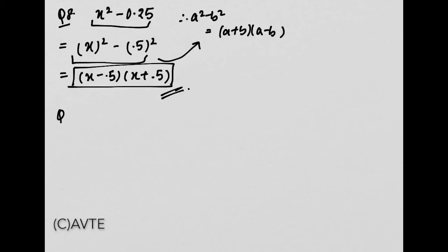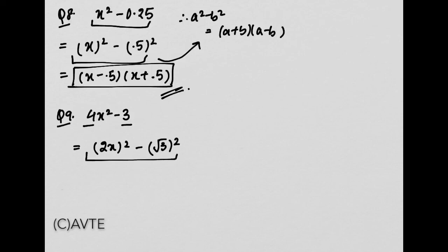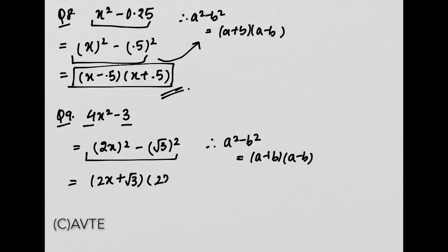Aaiye dekhte hain question number 9: 4x square minus 3. Is question mein hum dekh sakte hain ki 4 ek perfect square hai lekin 3 nahin hai, toh hum uska root lenge: 2x whole square minus root 3 whole square. Yeh equation a square minus b square ke form mein aa chuki hai, jisko hum a plus b into a minus b mein open karenge. So: 2x plus root 3 into 2x minus root 3. These are the factors of the given polynomial.